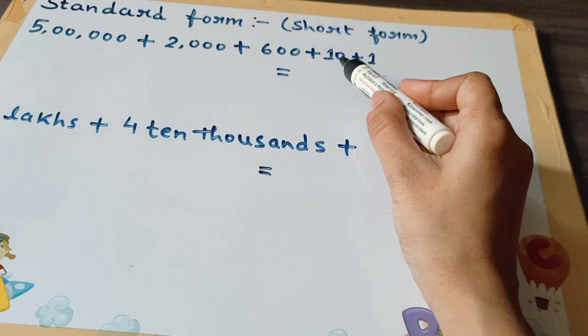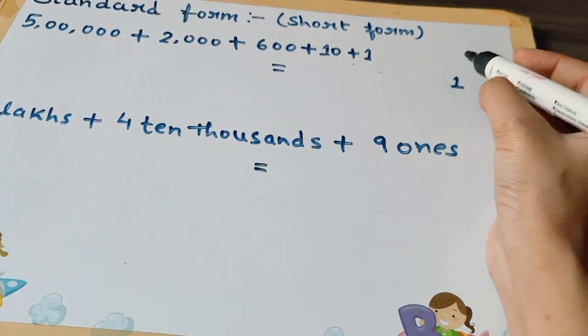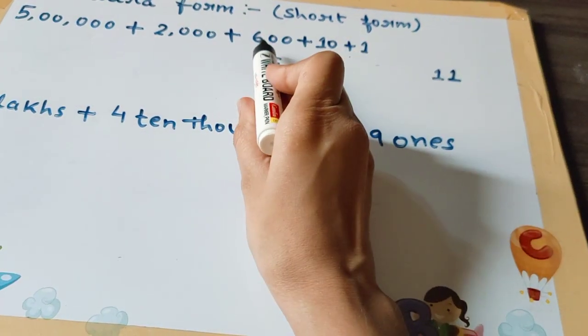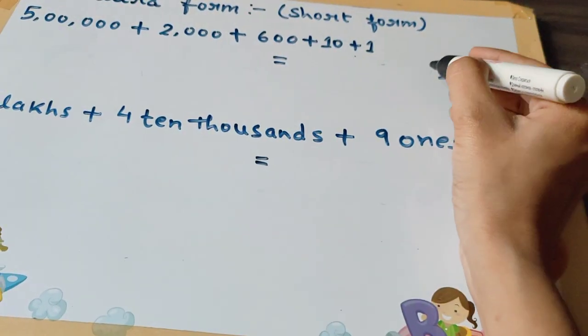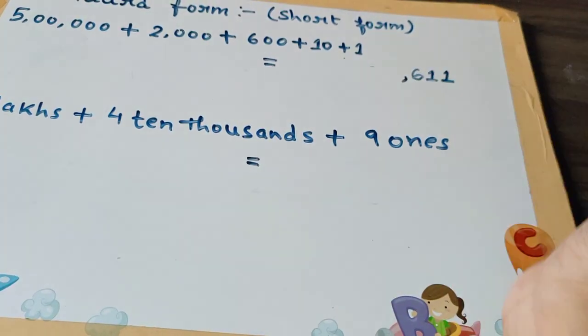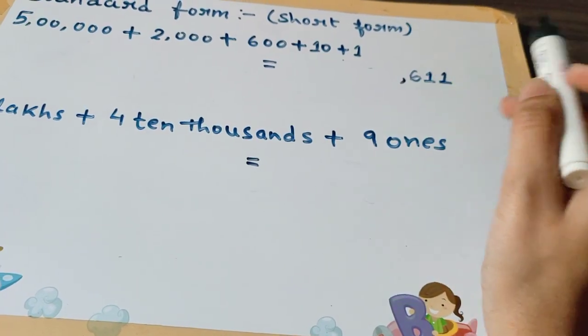At the tens place there is 10, so we will write 1. At the hundreds place there is 6, so we will write 6 and then put a comma. So ones, tens, hundreds are done.